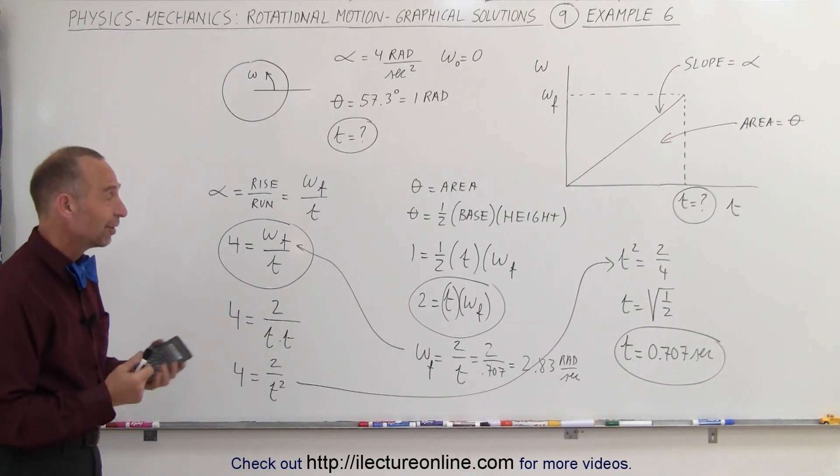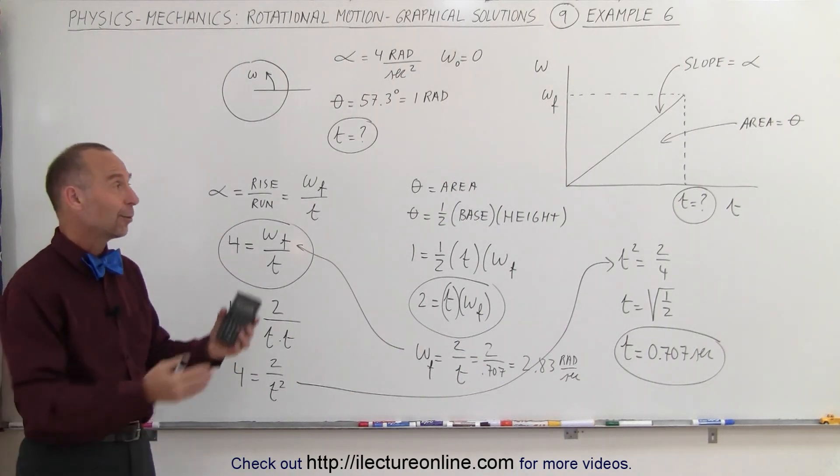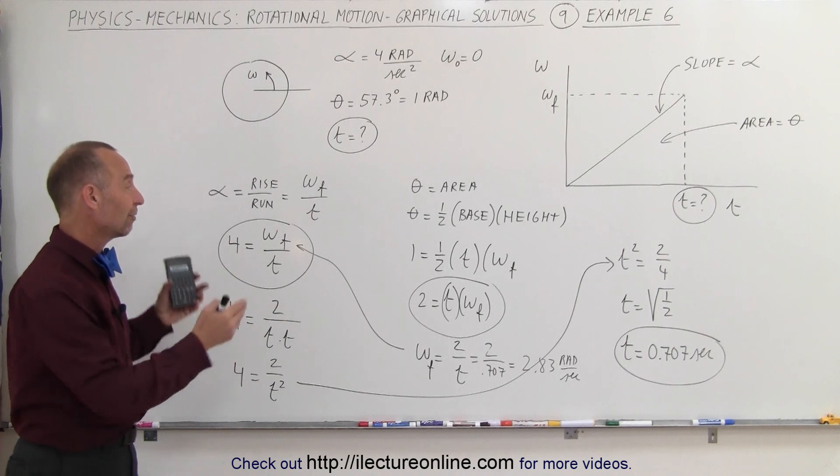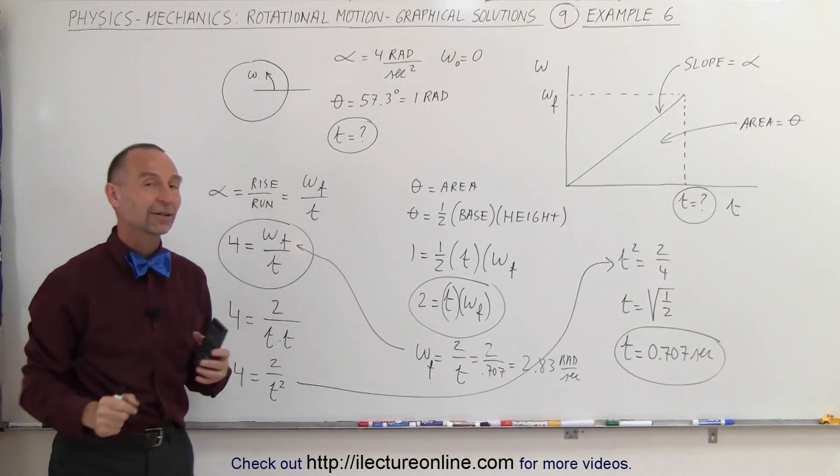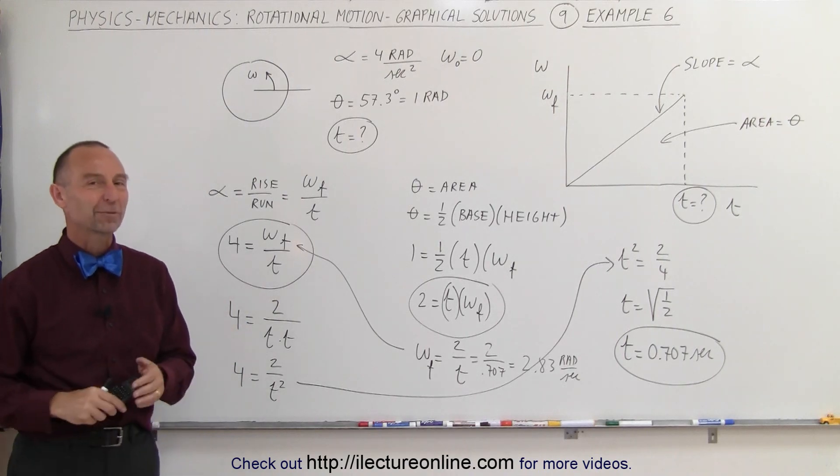And that's how we do that. So, in this case, there were two unknowns, and with a graphical technique, we can simply solve for both of them using the equation for the slope and the equation for the area at the same time. And that's how it's done.